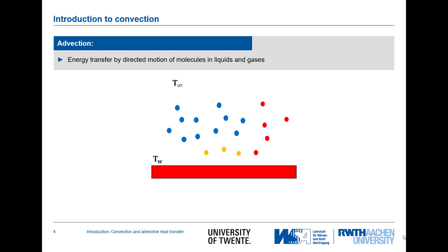Another mechanism for the transport or transfer of energy is advection. Advection is the energy transferred by a directed motion of molecules in a liquid or a gas. We can see in the image that colder fluid from the left side is brought by a motion towards the wall, where it becomes heated up due to heat transfer from the wall to the liquid, and then the hotter liquid is transferred away from the wall.